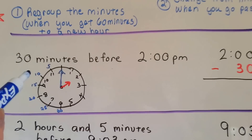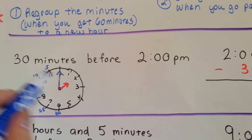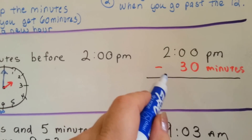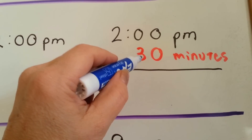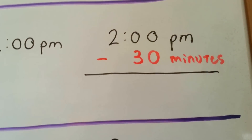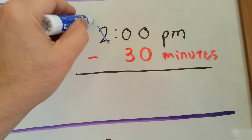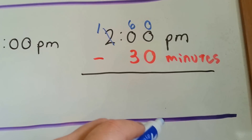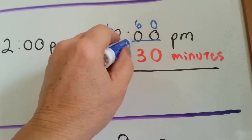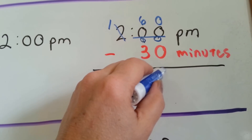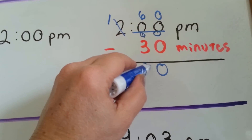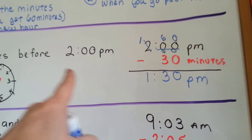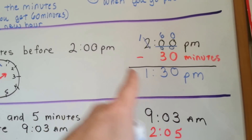Let's try this one. What time would it be if it was 30 minutes before 2 o'clock? So it's 2:00 PM minus 30 minutes. Can you have 0 and take 3 away? No, we can't. So we're going to have to borrow 60 minutes from this hour. It's going to become 1. And now that's going to become 60 minutes on this side. 0 take away 0 is 0. 6 take away 3 is 3. We drop down the 1. And it was 1:30 PM. 30 minutes before 2 o'clock PM is 1:30 PM.